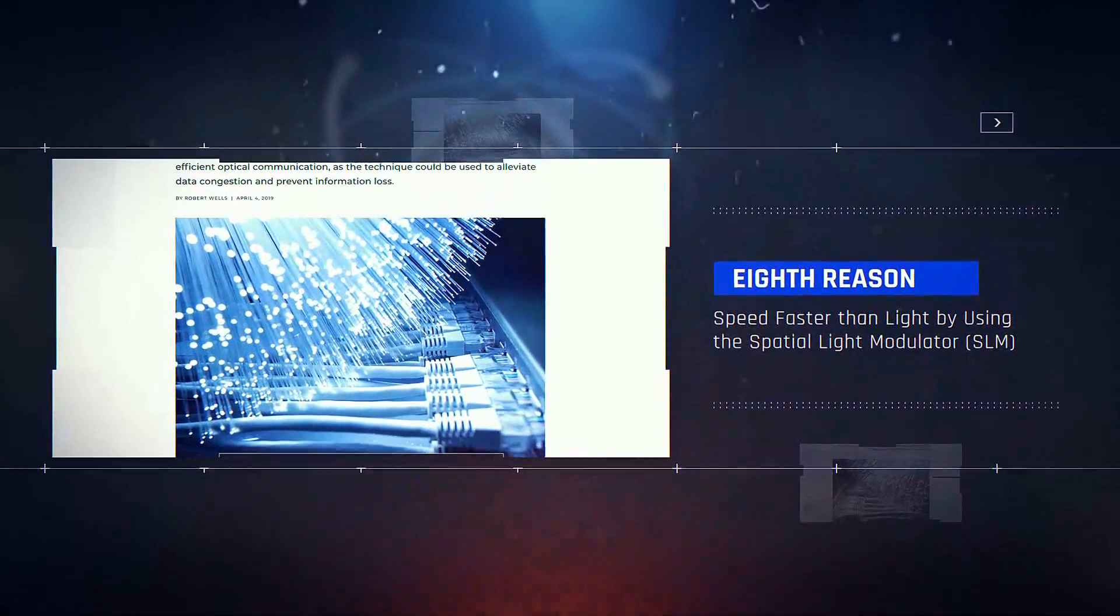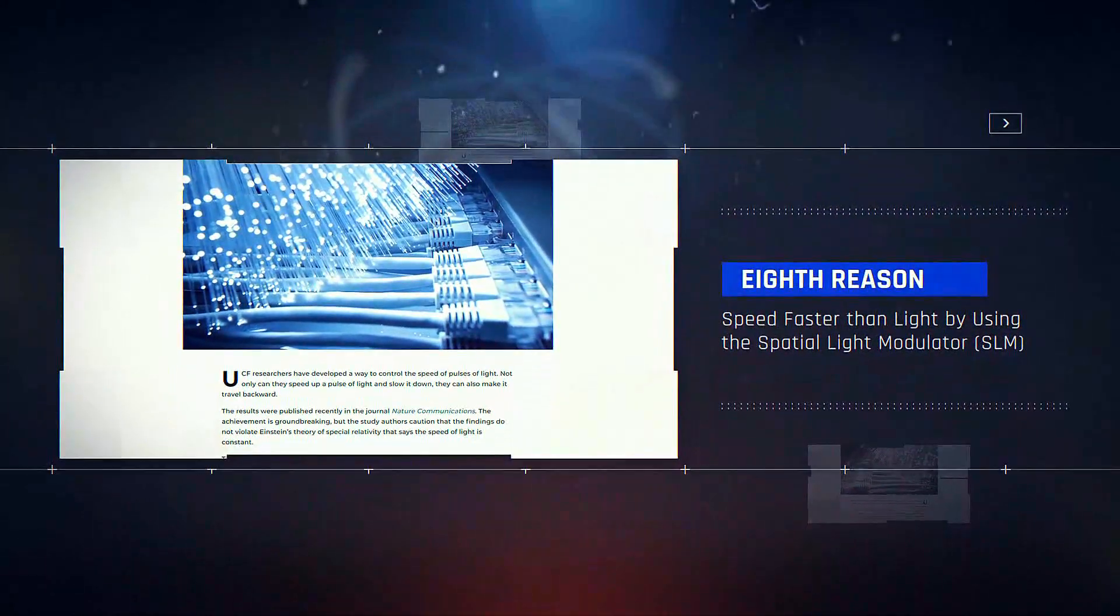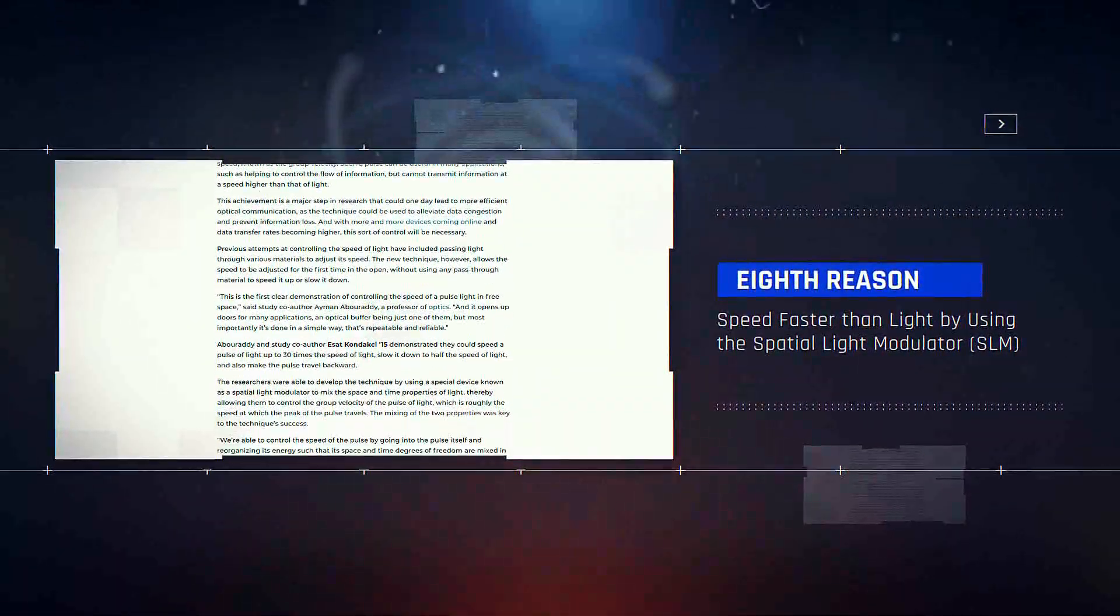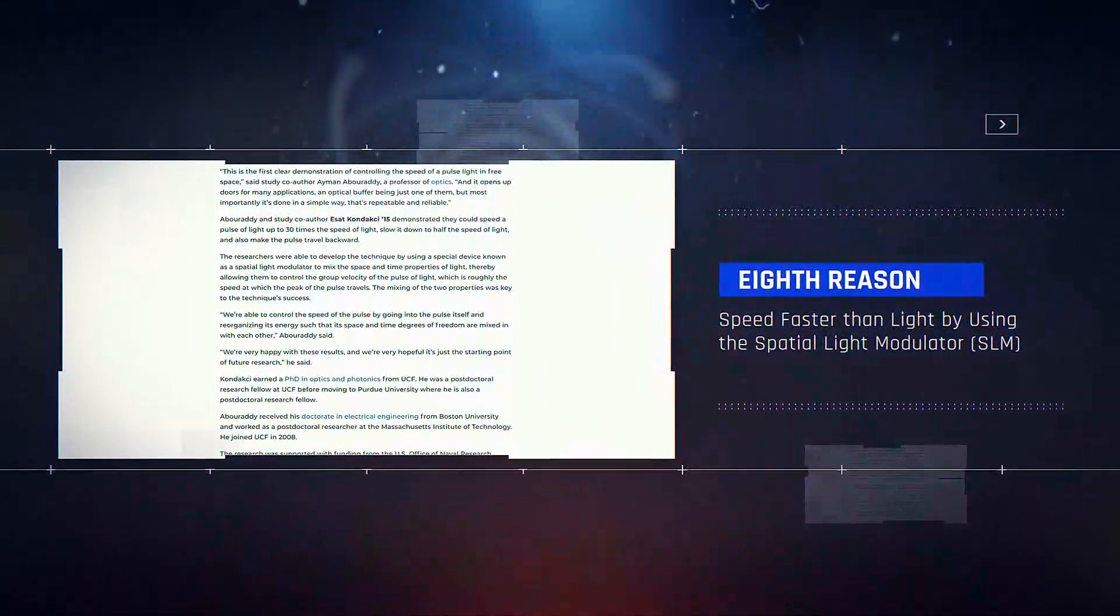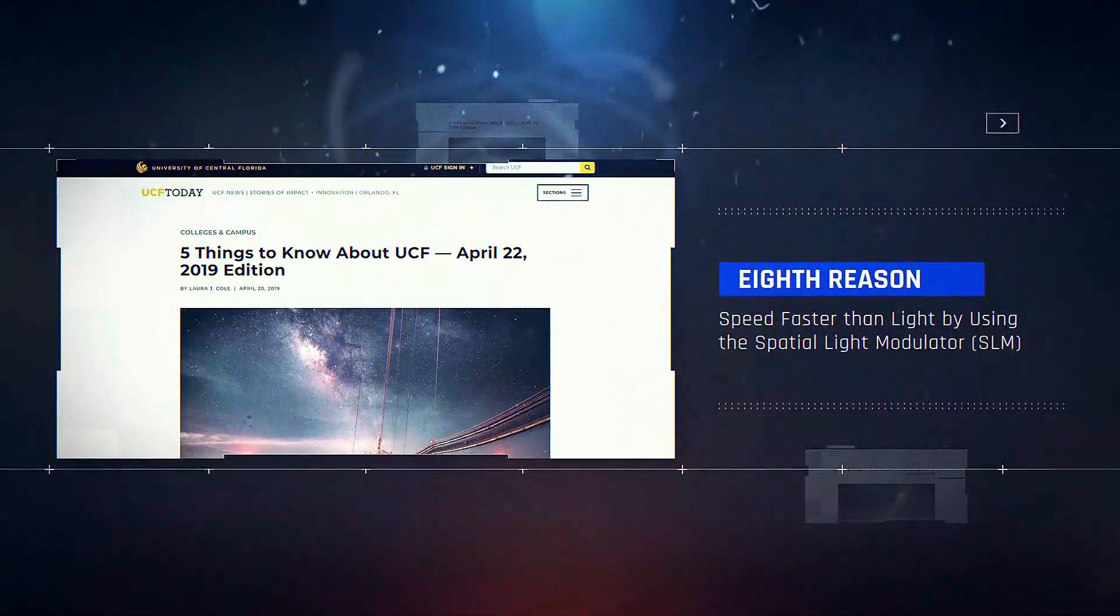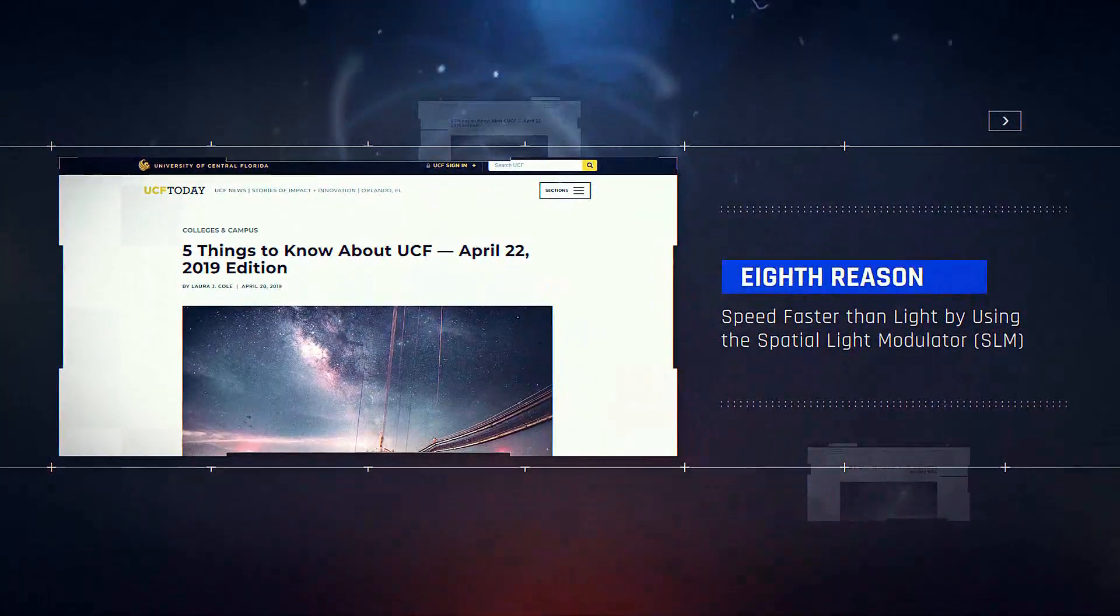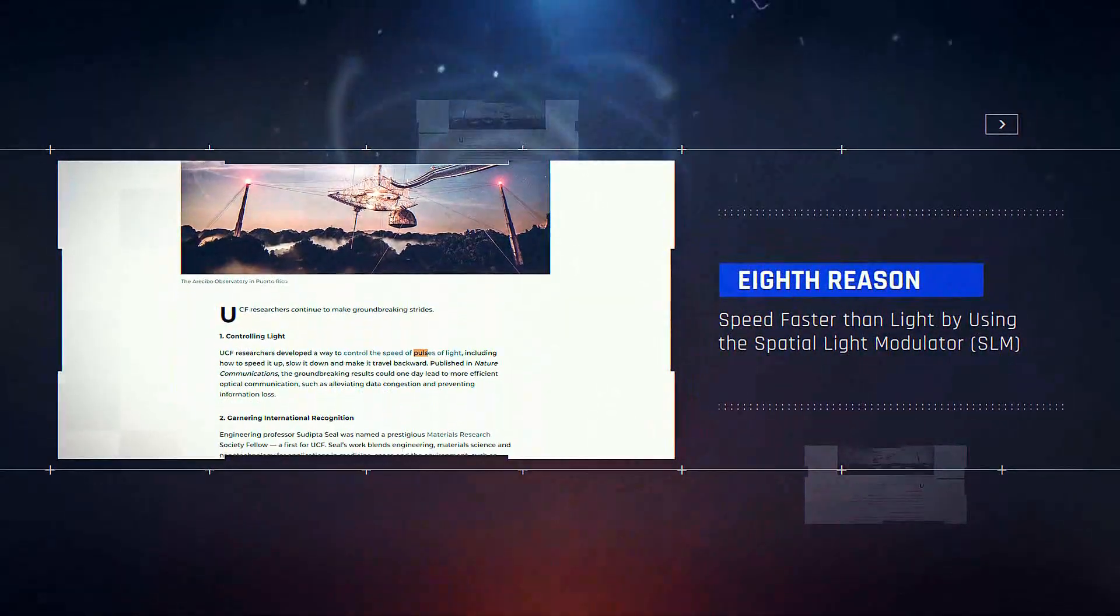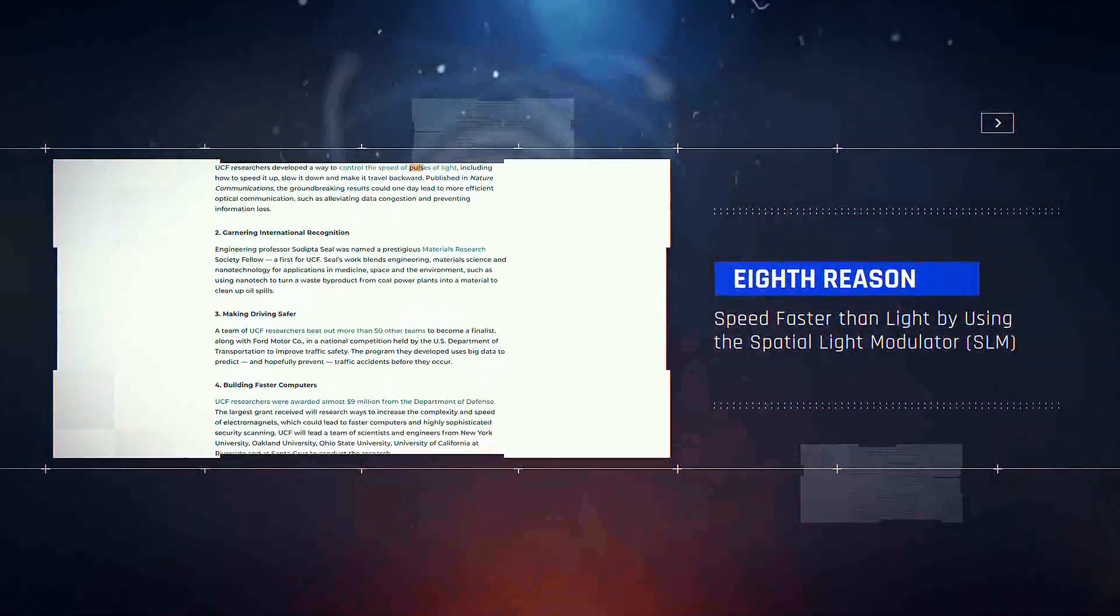8. Speed faster than light by using the spatial light modulator. Researchers in central Florida have presented a way to control the speed of light. They have managed to speed up a light pulse up to 30 times more than the speed of light and exceed the speed of light, or slow it down and reduce it to half the speed of light.